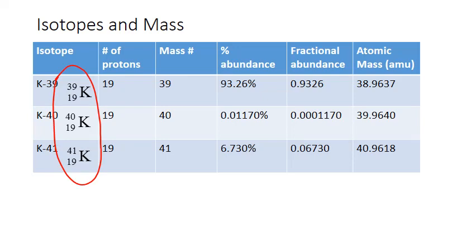Now each isotope has the same number of protons, of course, since they're all potassium, but they have different numbers of neutrons giving them different mass numbers. Really, the mass number just helps us distinguish between the different isotopes more easily. That's it — it doesn't tell us the true mass of that isotope.